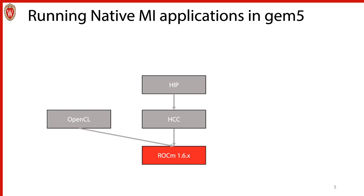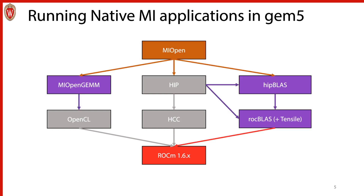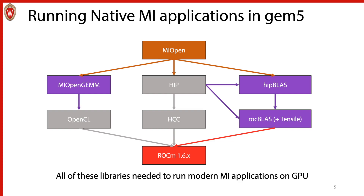The prior work implemented components of the overall ROCm framework and associated libraries: ROCm 1.6, HCC, HIP, and OpenCL. However, in order to run machine learning and machine intelligence applications, we need to add in a much larger set of libraries. In particular, we need the base machine intelligence library MIOpen, and the associated libraries it uses — MIOpenGEMM for matrix multiplication, and hipBLAS and rocBLAS as the basic linear algebra subsystem for MIOpen.